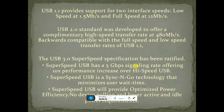USB 3.0 Super Speed specifications offer 5 Gbps signaling rate, offering 10x performance increase over high-speed USB. Super Speed USB features sync-and-go technology that minimizes user wait time. It also provides optimized power efficiency, better device cooling, and lower power requirements at idle.